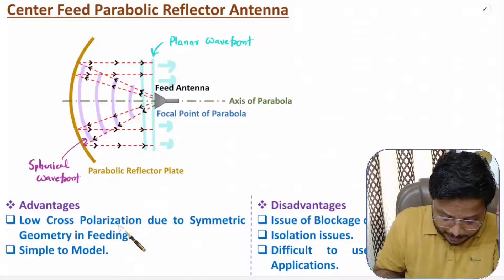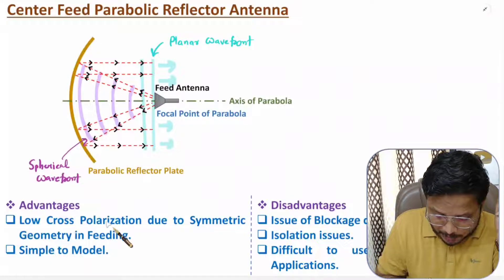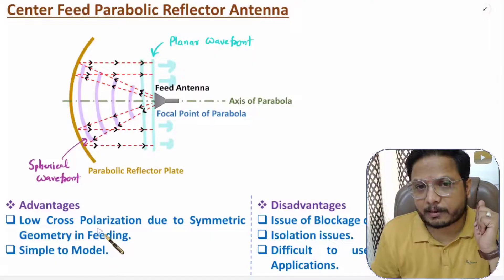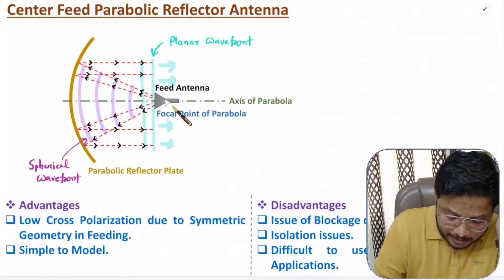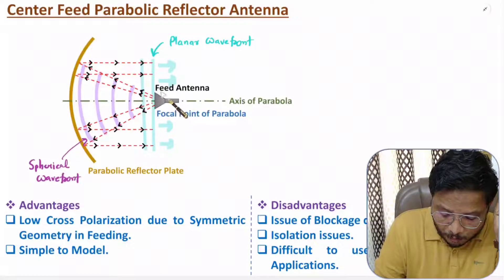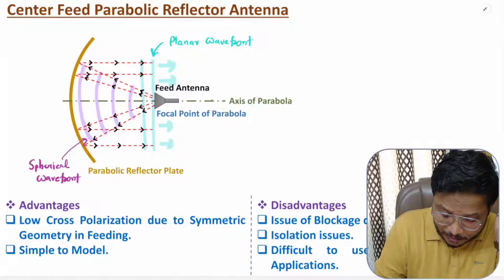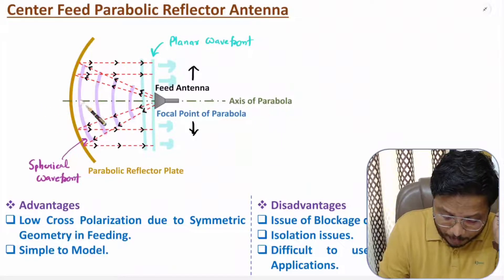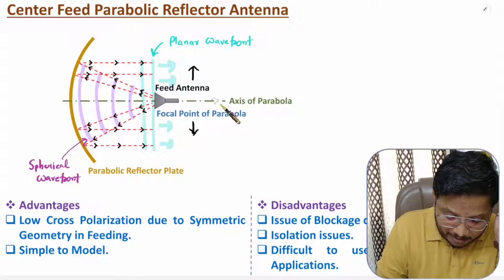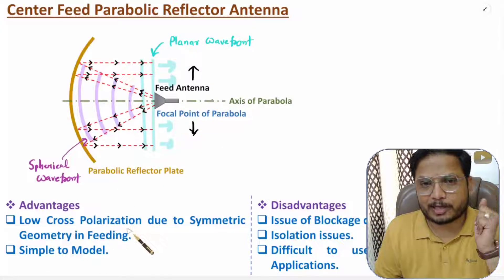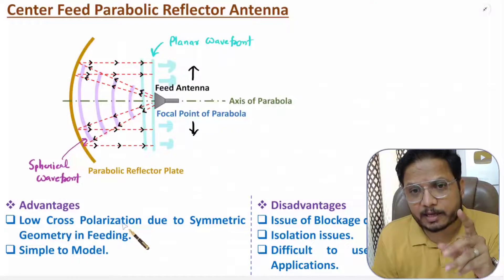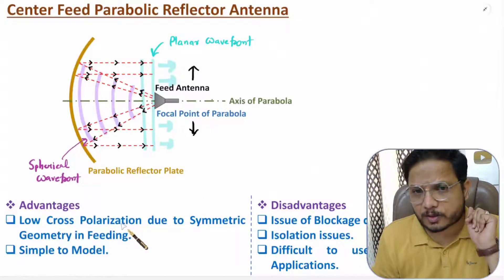There are a few essential key points to understand. This design has low cross polarization due to design symmetry. The feed is placed at the focal point which is on the axis of parabola, and the design is symmetric with respect to the axis of parabola. Always remember: with any antenna, if the design is symmetric with respect to feeding, it will always have low cross polarization.